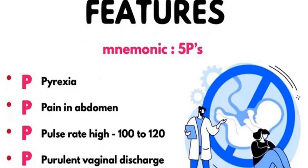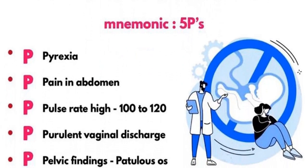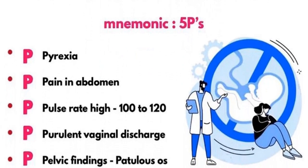The fourth P is for Purulent vaginal discharge — if during vaginal or speculum examination purulent vaginal discharge is found, this is another indication of septic abortion. The fifth P is Pelvic finding: during pelvic examination, a patulous os is seen. These are the five P's mnemonic for the features of septic abortion.